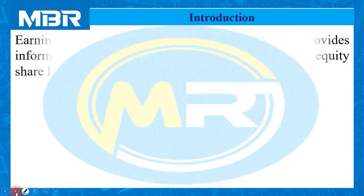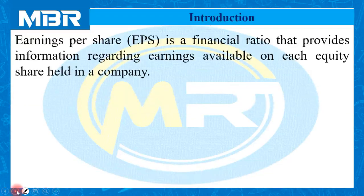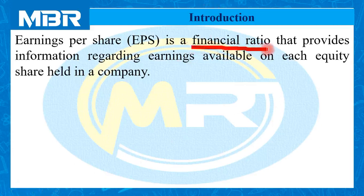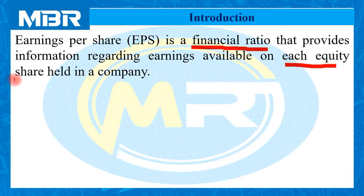For the purpose of understanding EPS, it is necessary for us to know that it is a financial ratio — a financial ratio that provides information regarding earnings available on each equity share held in a company. It means that it is a ratio, and a ratio includes two different items: one is a numerator and another is a denominator.